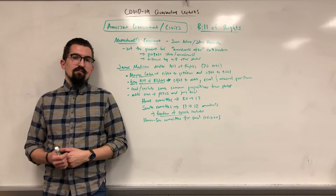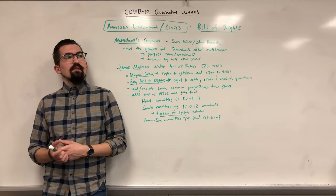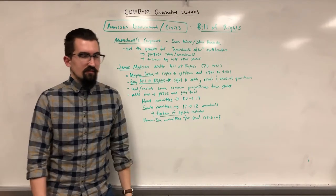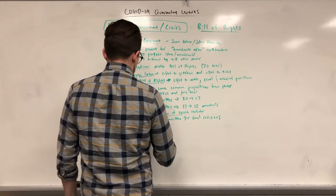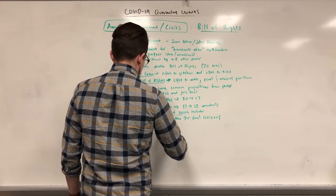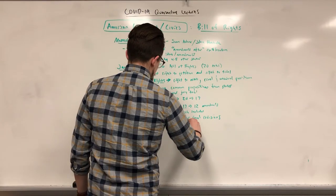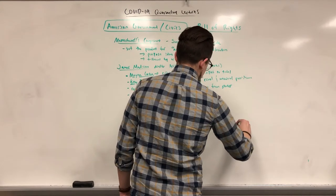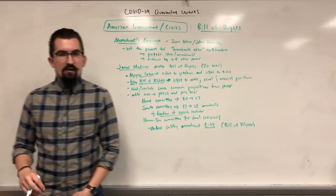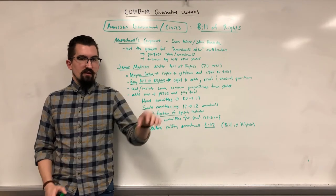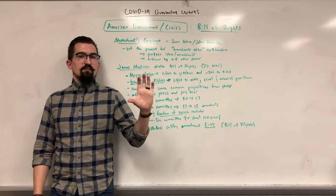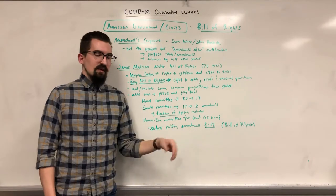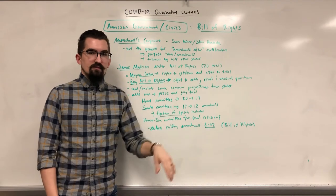The First Amendment — the original first proposed amendment about congressional pay raises — did get ratified later as the 27th Amendment in 1992, which says Congress can't give themselves a pay raise until the next session. After all this, the states ratified Amendments 2 through 12, which we know as the Bill of Rights. They added it to the end of the Constitution rather than inserting it inside. Madison apparently wanted to put the amendments into the Constitution itself, but they kept the original text and added amendments at the end.